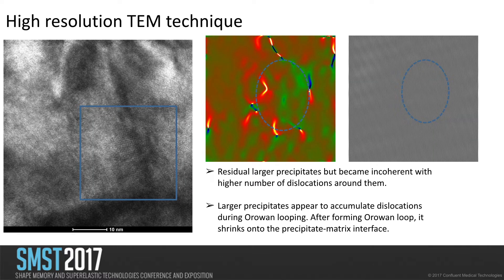Surprisingly, in the high-resolution images we sometimes see larger precipitates that still survive. Performing the same GPA strain mapping around the interface of these larger precipitates with the matrix, we see that the number of dislocations at the interface has increased, and the inverse FFT on the right shows the presence of extra half-planes. What happens is: dislocations interact with smaller precipitates and shear and dissolve them, but for the larger ones they form an Orowan loop around them. Since this interface still has significant coherency strain energy, the Orowan loops are absorbed by the interface, which is why you see a large accumulation of dislocations around it.